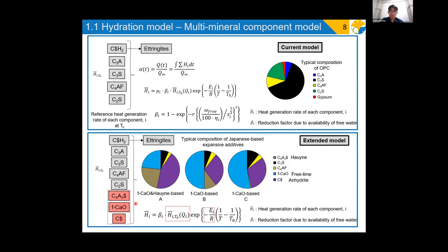For expansive additives which contain these three extra phases such as C4A3S or yeelimite, free lime, and anhydrite, the current model does not process yet. Therefore, the initial step would be to include this reference heat rate of the previous phases, whereby the thermal activities could be determined from the literatures.